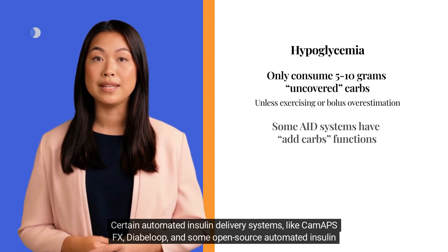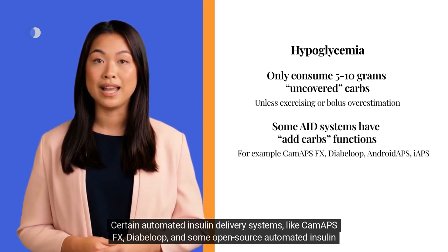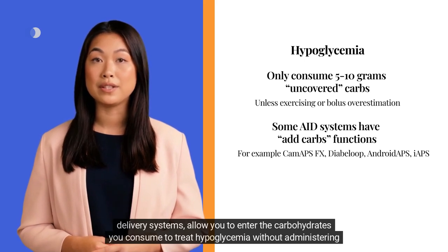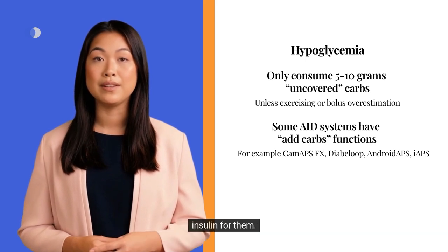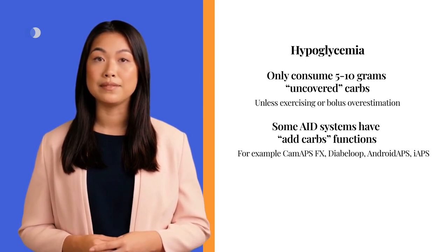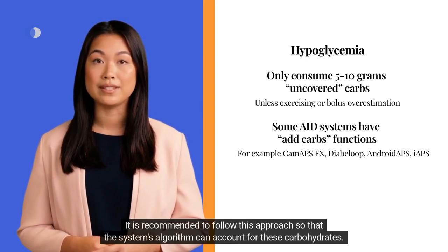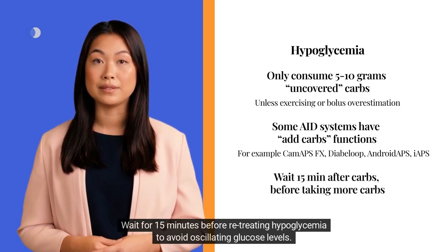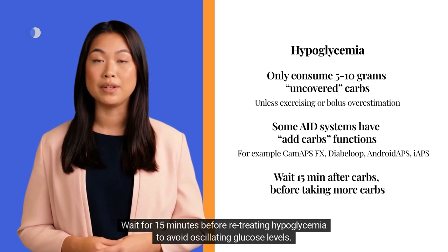Certain automated insulin delivery systems like CAM-APS-FX, Diabeloop, and some open-source systems allow you to enter the carbohydrates you consume to treat hypoglycemia without administering insulin for them. It is recommended to follow this approach so that the system's algorithm can account for these carbohydrates. Wait 15 minutes before retreating hypoglycemia to avoid oscillating glucose levels.